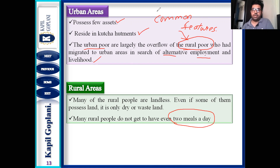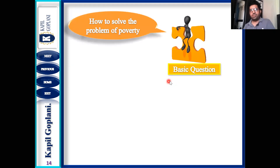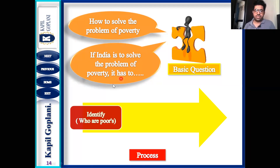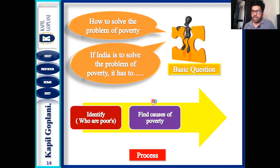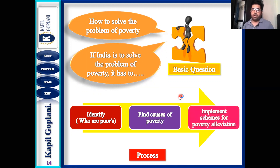Now the basic question: how to solve the problem of poverty? Poverty exists in rural as well as urban areas. If India is to solve the problem of poverty, there is a process to follow: first, identify those who are poor; second, find what are the causes of poverty in rural areas and urban areas; then implement the schemes and poverty alleviation programs.